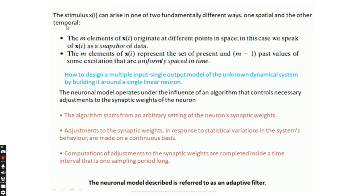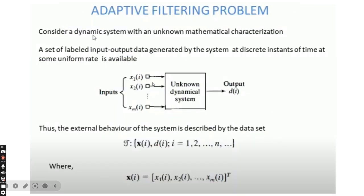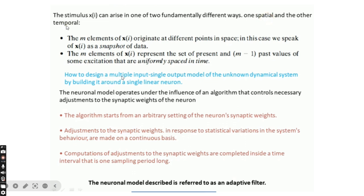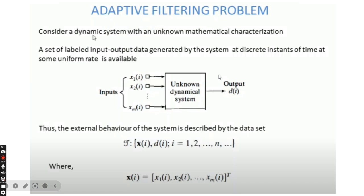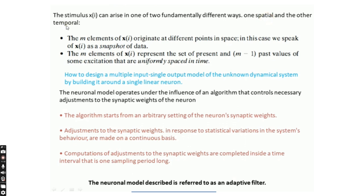If the m elements of xi represent present and past values, it is temporal-based. To design this system, if we need to design a multiple-input single-output model of an unknown dynamical system by building around it a single linear neuron, then the neural model operates under the influence of an algorithm that controls the necessary adjustments to the weights applied to the neuron.